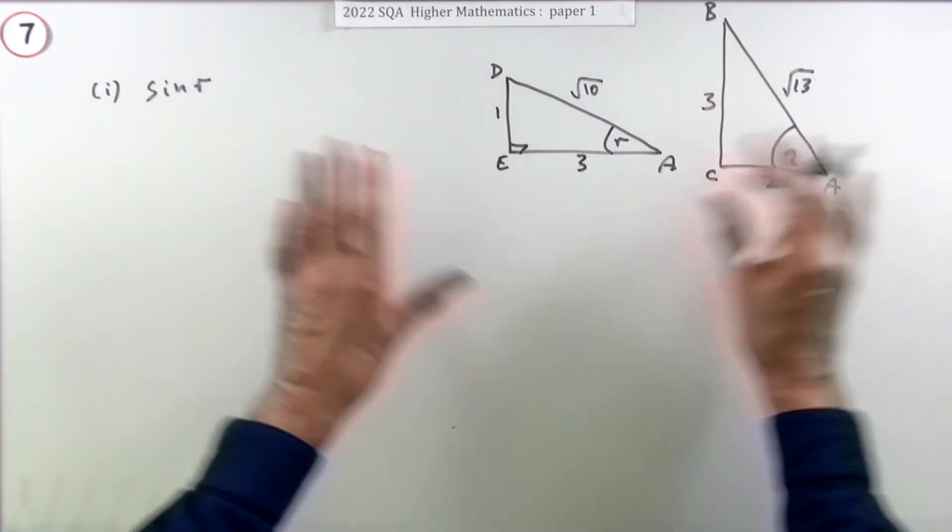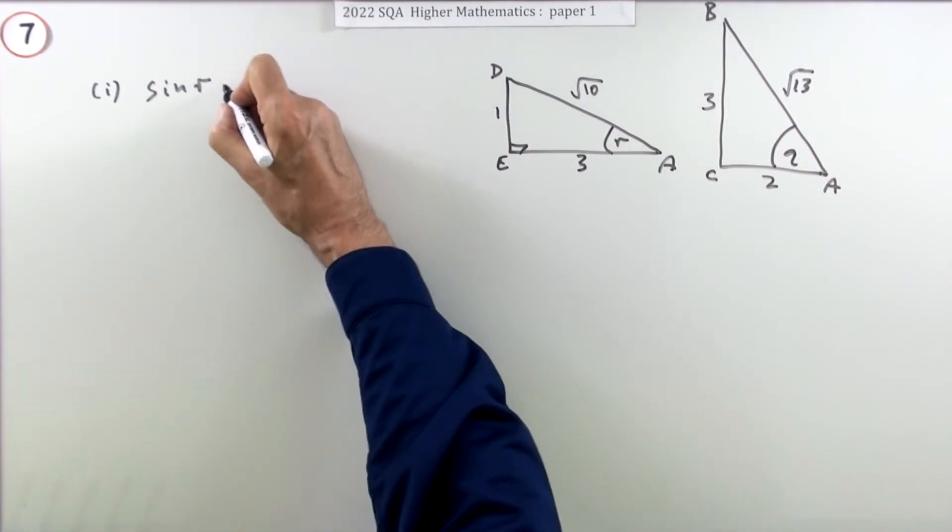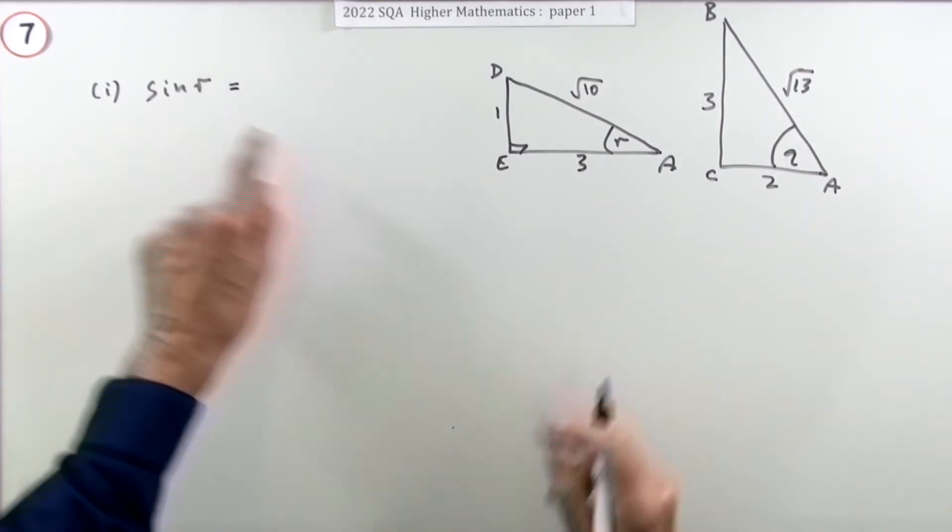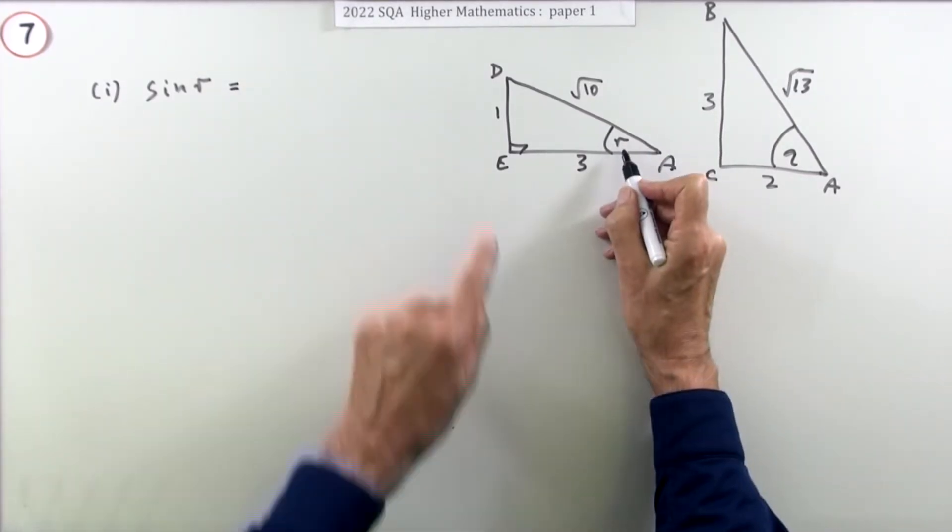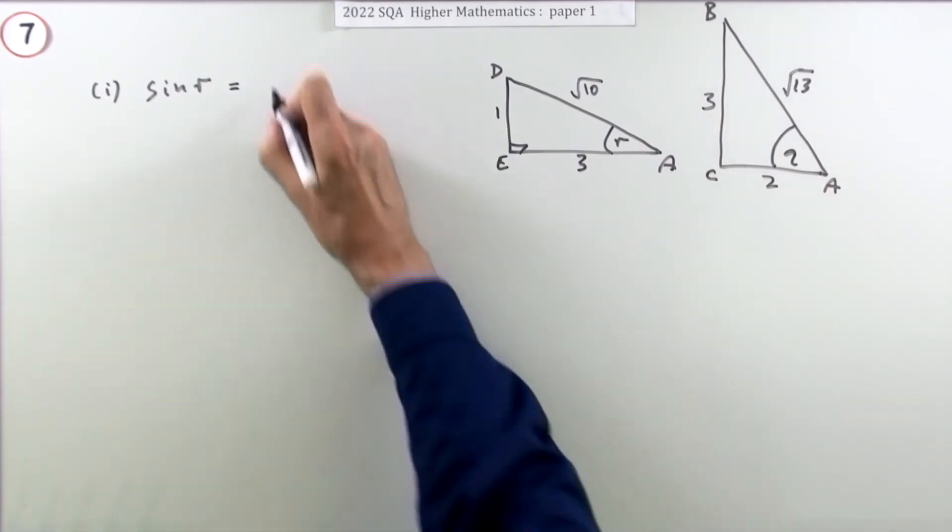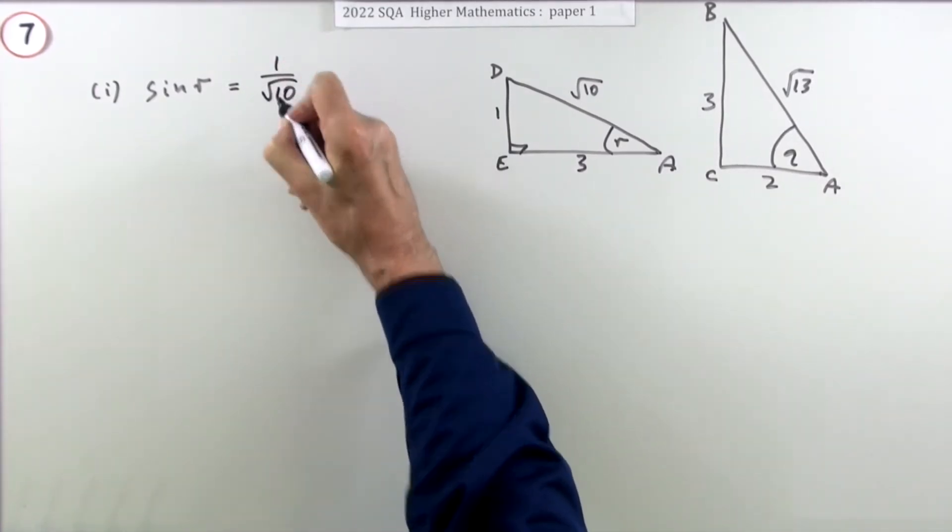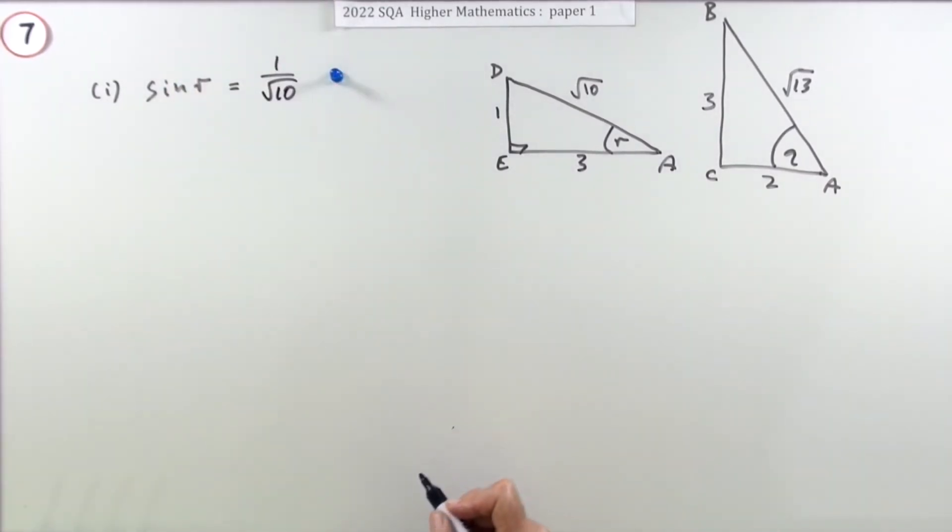Now there's no marks yet for doing all of that. You don't get the marks because there's only one mark until you actually feed that in. So what's the sine of R? Well, the sine is the opposite over the hypotenuse, so that's 1 upon root 10. That's a mark.